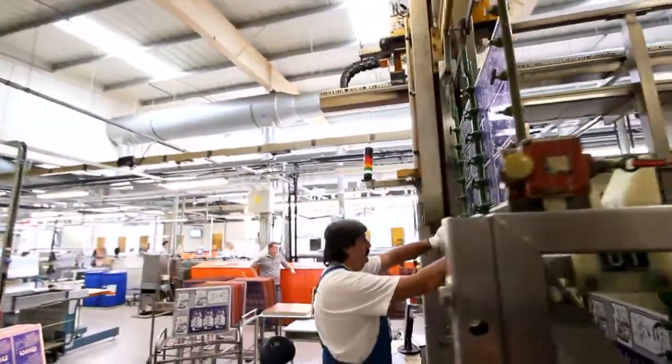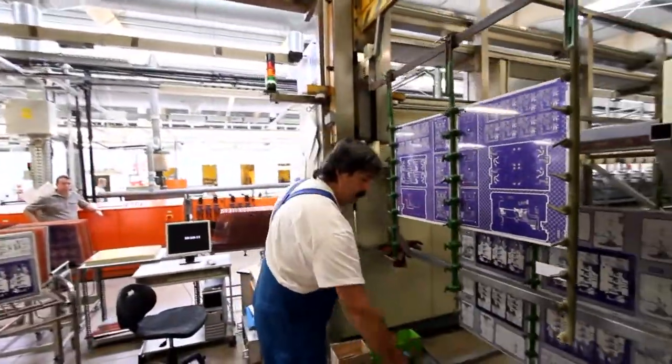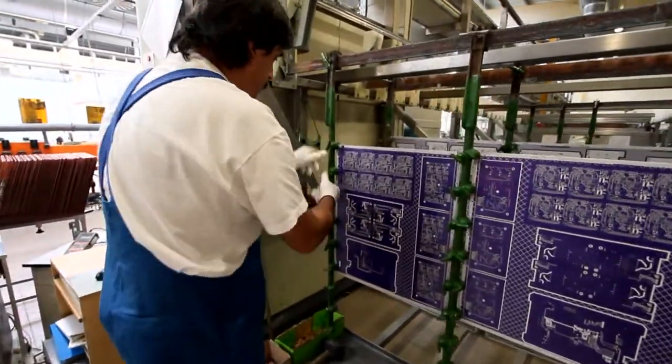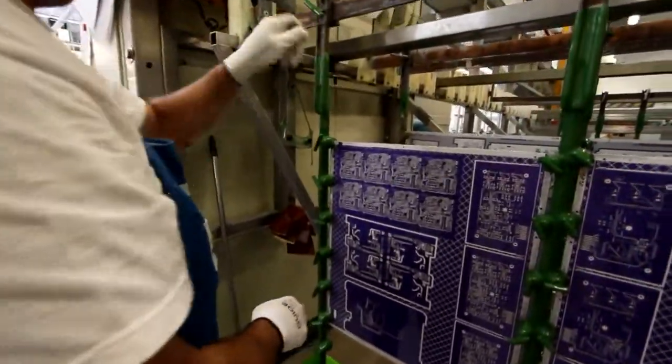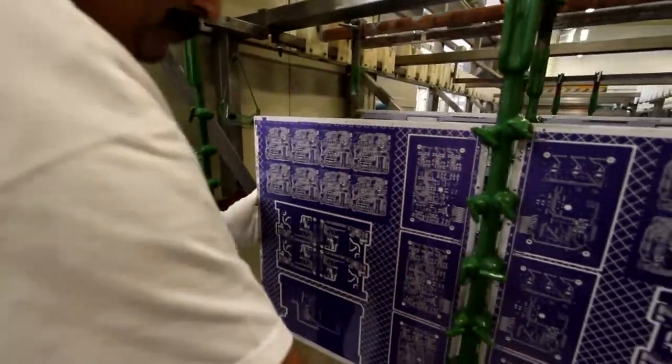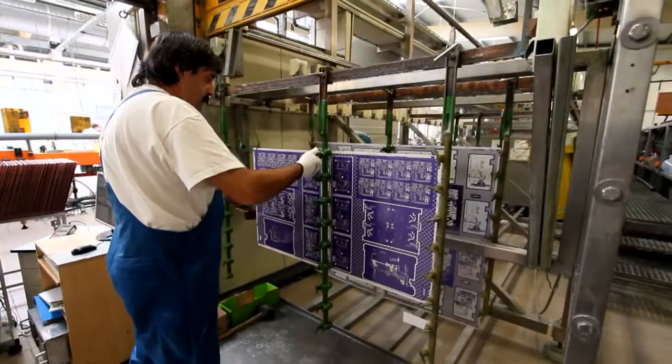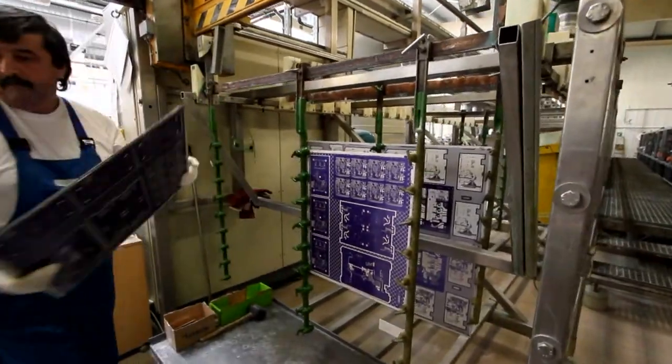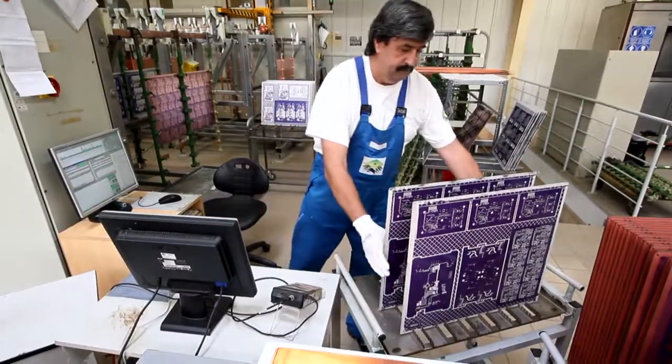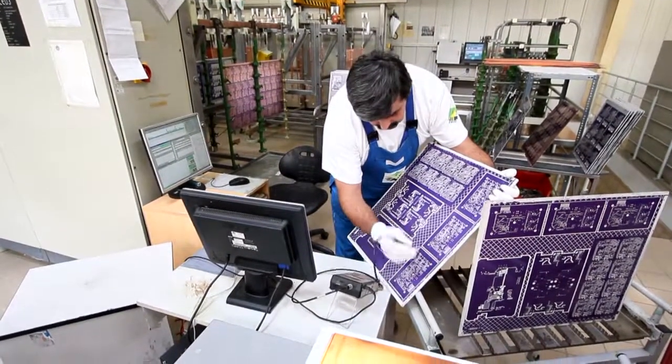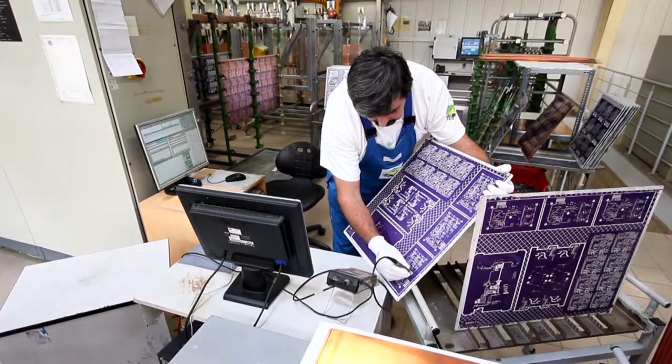Once we have plated the copper onto the board, we then plate a thin layer of tin. This we will use in the next step of the process, when we etch off the unwanted copper foil. When plating is completed, the flight of panels is returned to the operator and he unloads and stacks the plated panels. He then uses non-destructive testing to check a sample of each flight to ensure that the copper and tin plating is the correct thickness.